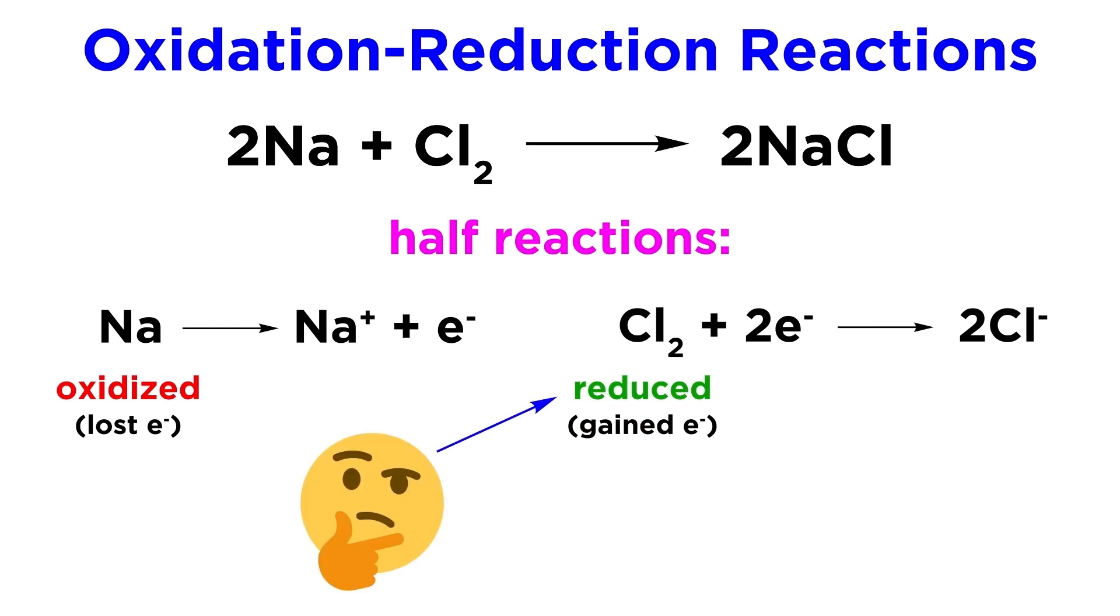It may be confusing to associate reduction with a gaining of electrons, so think of it as a reduction of charge. Neutral chlorine atoms become one minus chloride ions, so the charge has been decreased or reduced.